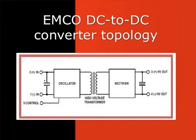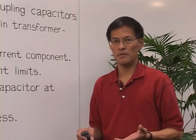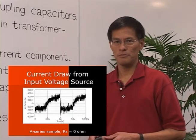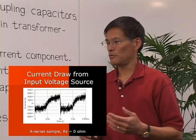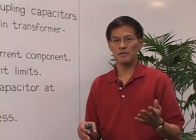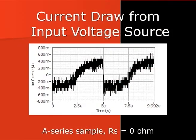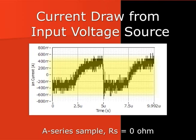The Emco converter topology is shown here with an oscillator, a transformer, a rectifier on the output side, as well as capacitors in both the input and output. We show here also a current waveform from an actual A series sample with no source resistance. The important thing to note is that the input current waveform is quite distinctive — you can clearly see how the converter operates by looking at this current waveform.